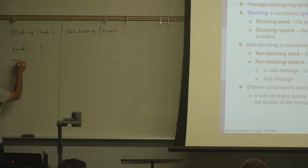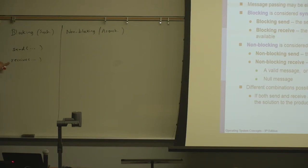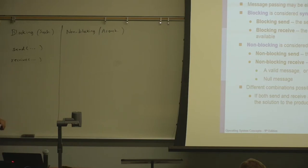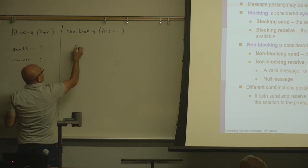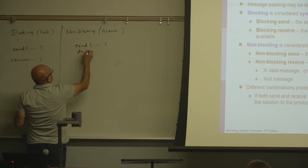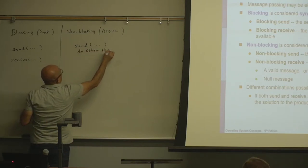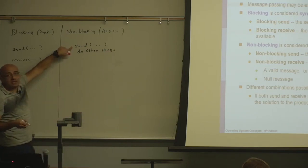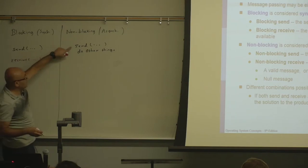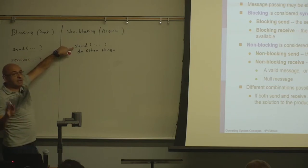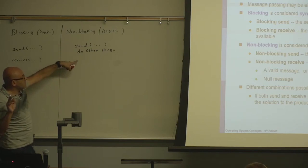The same applies to receive: when you receive, you block until the message arrives. So if a process does receive and the message is not available yet, that process will be blocked until the message becomes available. With non-blocking, the sender does not have to wait and the receiver does not have to wait. The sender can send and then do other things. When the send returns in non-blocking mode, it doesn't mean the message has been delivered. With blocking, when send returns, the message has been delivered.